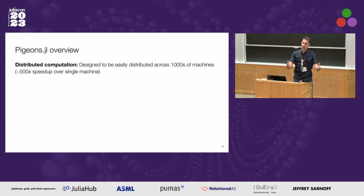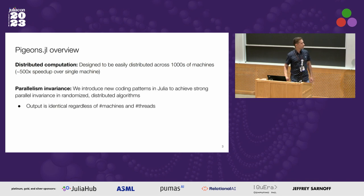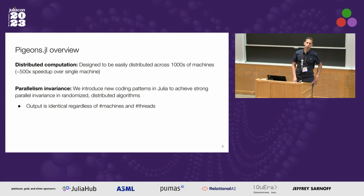Communication is necessary for this algorithm, so we can't just run it completely independently on a thousand machines — they need to communicate with one another. We also introduce new coding patterns to achieve something called strong parallelism invariance, where the output is identical irrespective of how many machines you use and how many threads per machine.